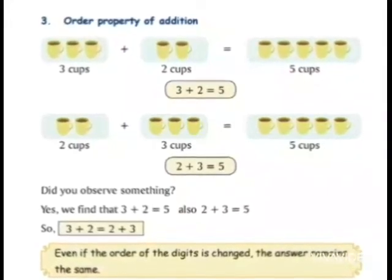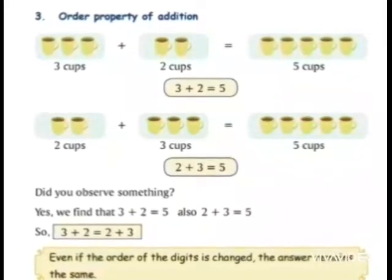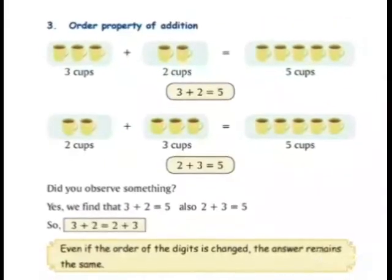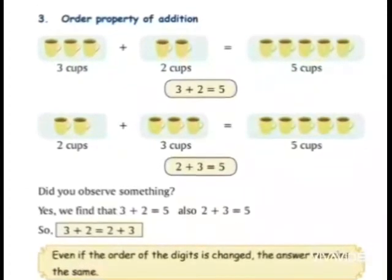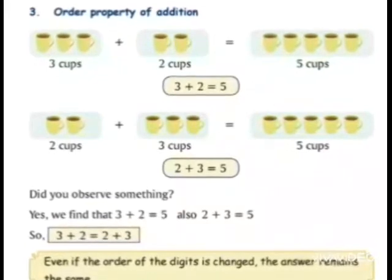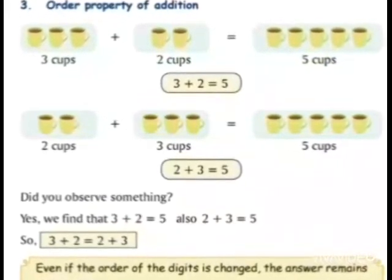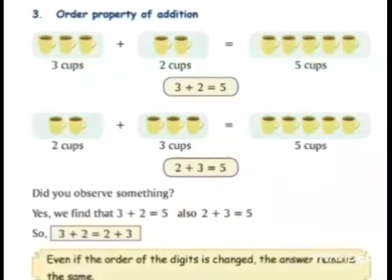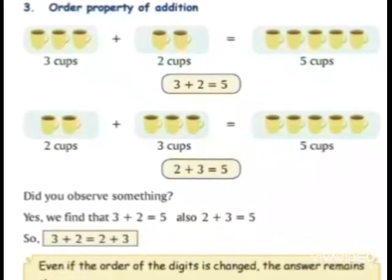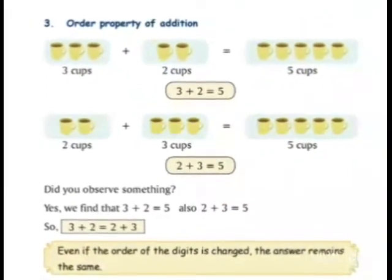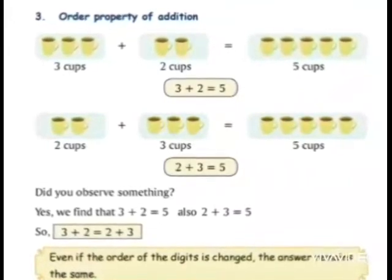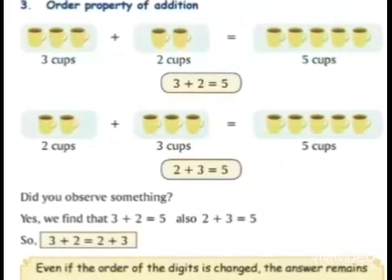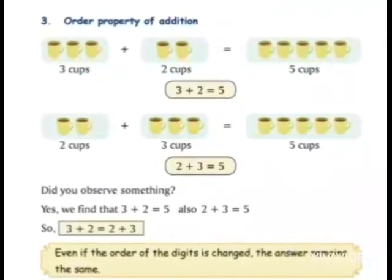Now the next is the Order Property of Addition. See in the first box how many cups are there — count: one, two, three. Plus count in the second box: one, two. Is equal to — now count in the third box: one, two, three, four, five. It means three plus two is equal to five.